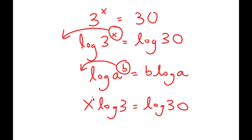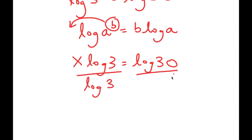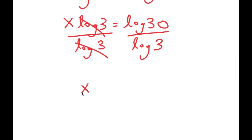Now that x is an actual term, I can solve for it by getting rid of this log 3. So I'm going to divide both sides by log 3. These two cancel out, and I get x is equal to log 30 over log 3.